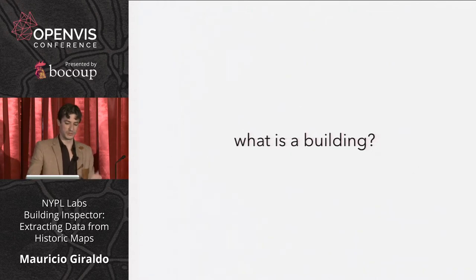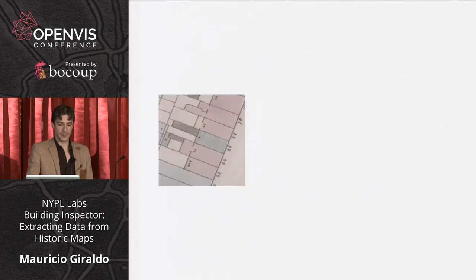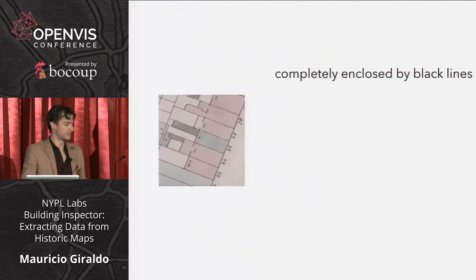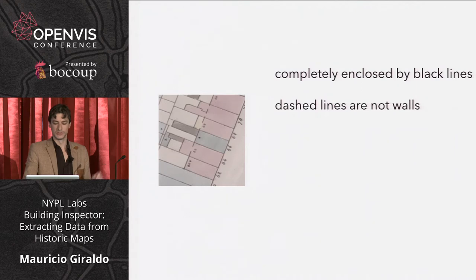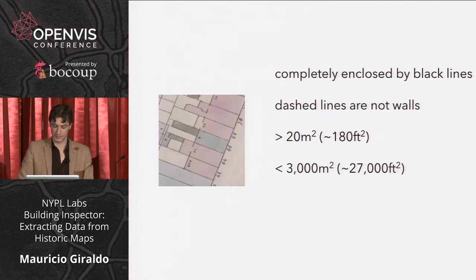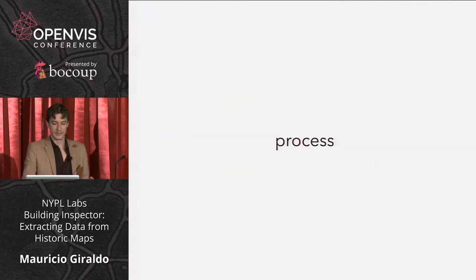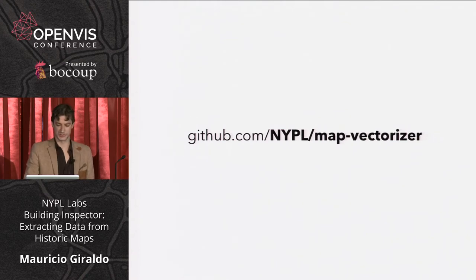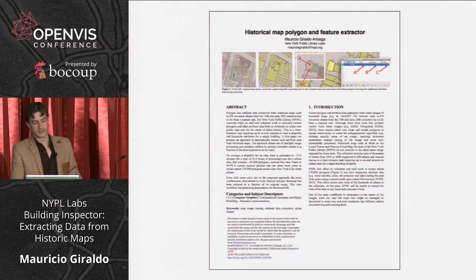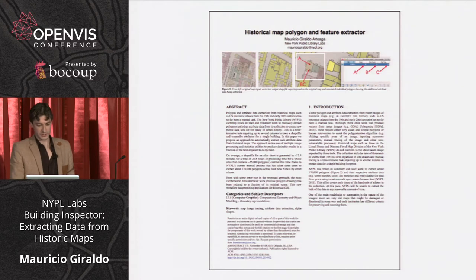First of all, we need to define what a building is for our specific need. For this specific map, this won't generalize for every single map in the world. A building is completely enclosed by black lines — dashed lines do not count as walls. It has to be more than 20 square meters area and less than 3,000 square meters area. And it has to be not the color of paper. The process itself is in this repository, and I did a paper on it which I had the opportunity to present at the ACM geospatial conference.